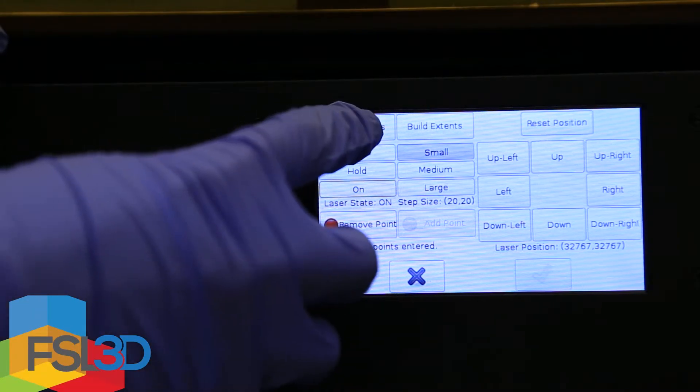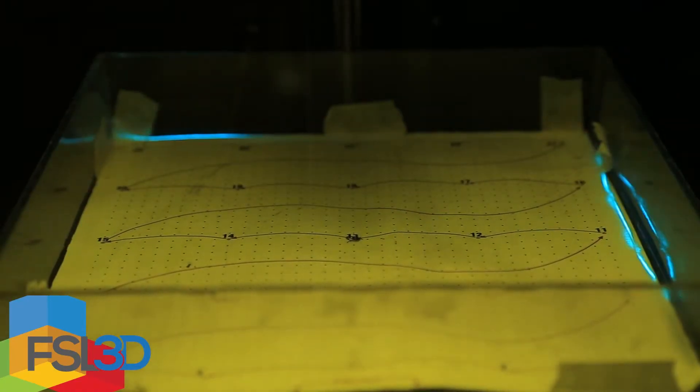From here, hold down the laser extents button. Notice these extents are too large, distorted, and extend off the vat.